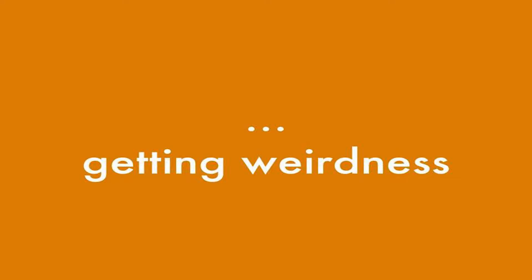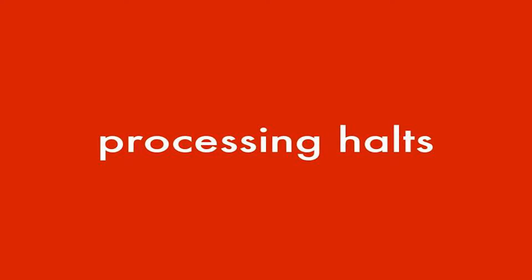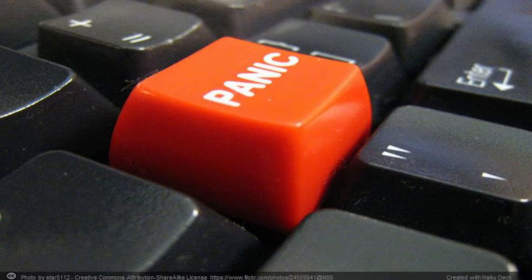At twenty days of data, things start getting really, really bad. The enrichment layer over the top of this data is now beginning to fail quite miserably. We're getting even more weirdness and we don't know how to trace it or where it's coming from. Now we've moved to one month, and we've promised these guys we can get one year. Everything's going down — complete halts across everything, multiple failures across all different areas of the system. And the business owners, developers, and head of product are all pressing the panic button.